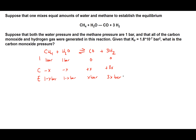Now we want to set up our equilibrium expression. KP equals the concentration of the products over the reactants: we have the concentration of CO times the concentration of H2 — and because we have the coefficient of 3 in front of H2, we need the exponent of 3, so it's cubed. At the bottom we have the concentration of CH4 times the concentration of H2O.